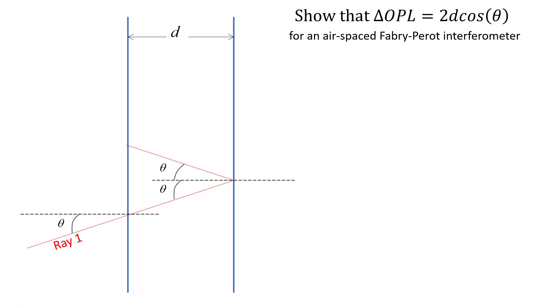A viewer had asked, why is the difference in optical path length between two adjacent interfering rays in an air-spaced Fabry-Perot resonator equal to 2d cosine of theta? It might seem like it should be 2d divided by cosine theta.